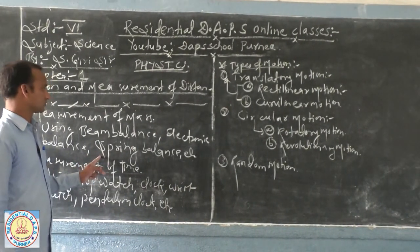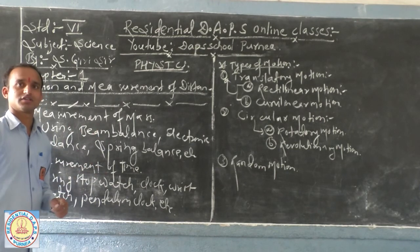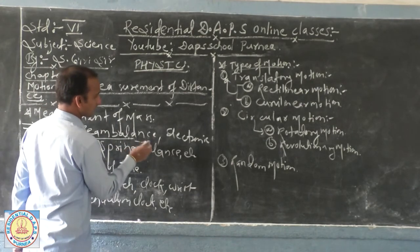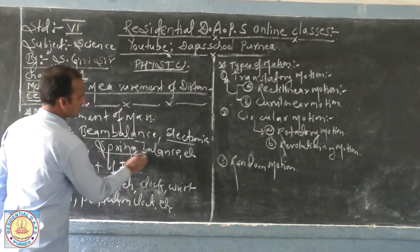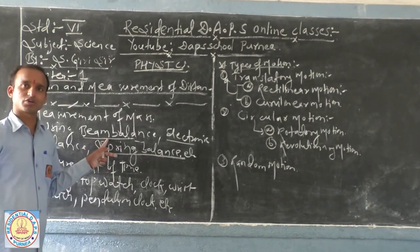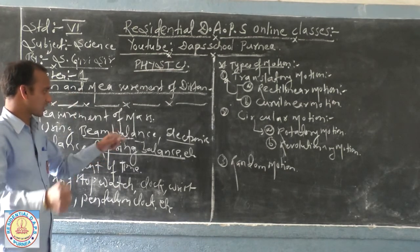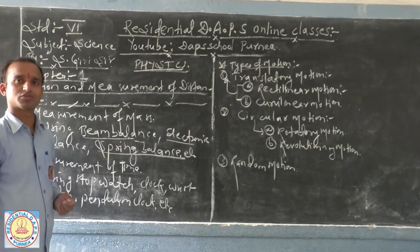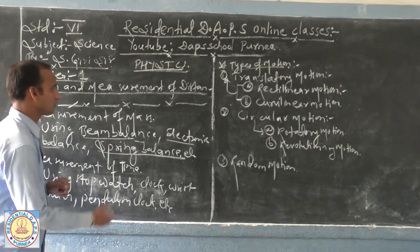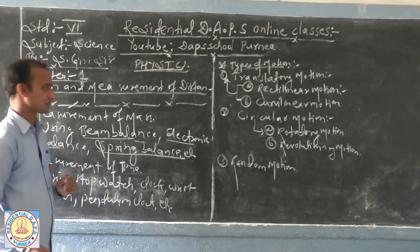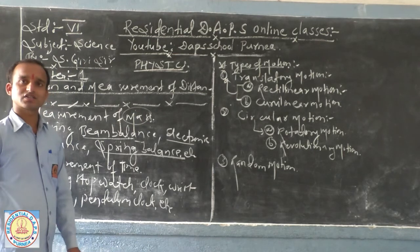So, dear friends, now how to measure the mass of a body? Because we know, and we have been using the beam balance in our daily life, electronic balance, spring balance in our daily life. Then we will use this type of device to measure mass — using the beam balance.